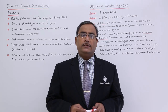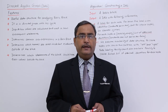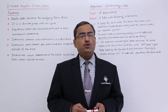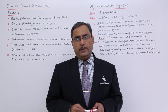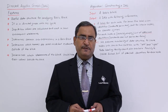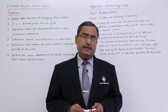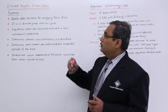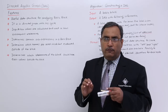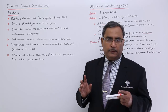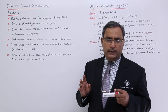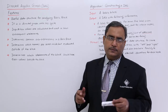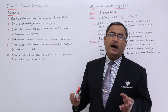In this session we are going to discuss DAG, directed acyclic graph, that is another way to do code optimization. From the very name it is quite obvious: it will be acyclic, meaning no cycle will be there; it will be directed, so edges will be there, and it will be a graph.